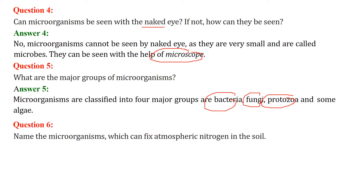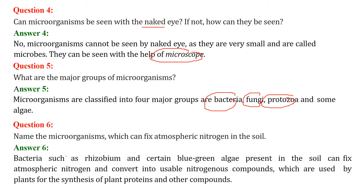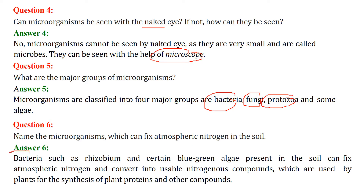Name the microorganisms which can fix atmospheric nitrogen in the soil. Bacteria like rhizobium and certain blue-green algae present in the soil can fix atmospheric nitrogen and convert it into usable nitrogen compounds, which can be used by plants for the synthesis of plant proteins and other compounds.